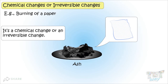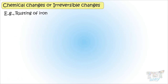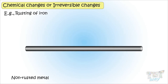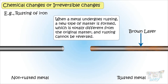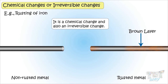Here is another example: rusting of iron. Here we have a metal which is not rusted, and here we have a metal which is rusted. This brown rough layer you see on the metal is rust. When a metal undergoes rusting, a new type of matter is formed which is totally different. So rusting is a chemical change and also an irreversible change.